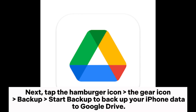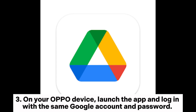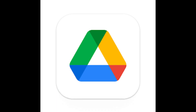Tap Start Backup to back up your iPhone data to Google Drive. Step 3. On your Oppo device, launch the app and log in with the same Google account and password. Afterward, tap the file name you want to download, click More or the three dots, and choose Download to export the file to Oppo's local storage.